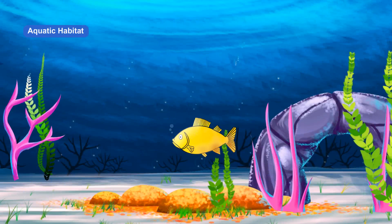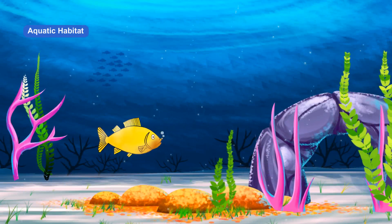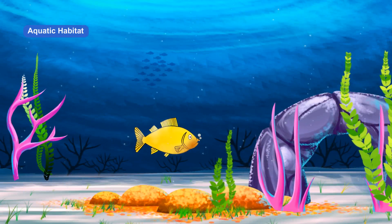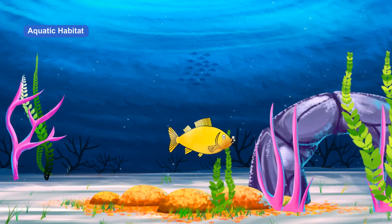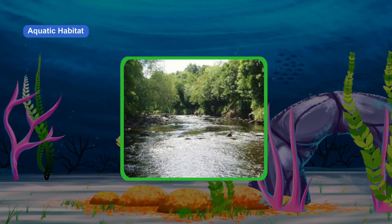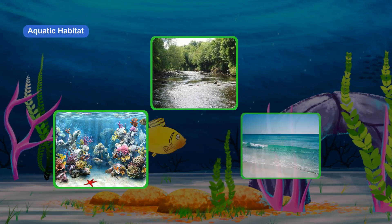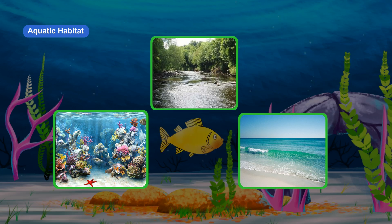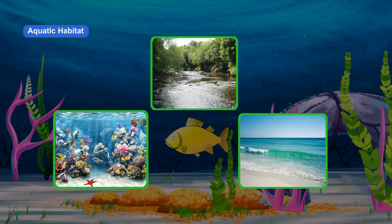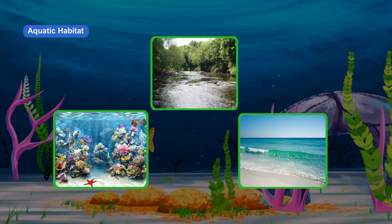Habitat in water is called aquatic habitat. Freshwater habitat, marine habitat and coastal habitat are types of aquatic habitats.